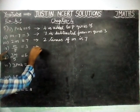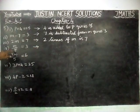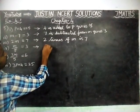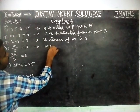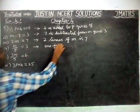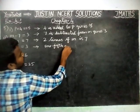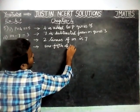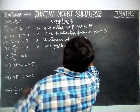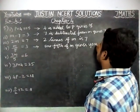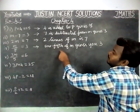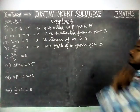4th question: M divided by 5 is equal to 3. 1/5th of M gives 3.